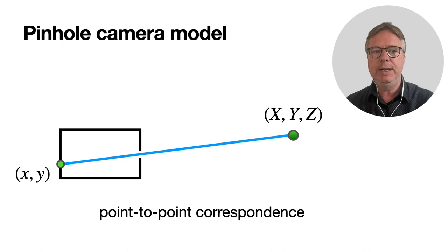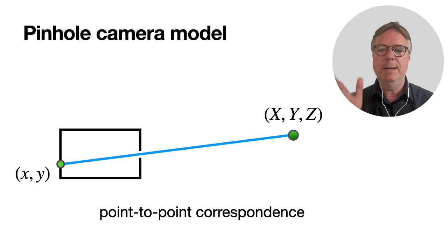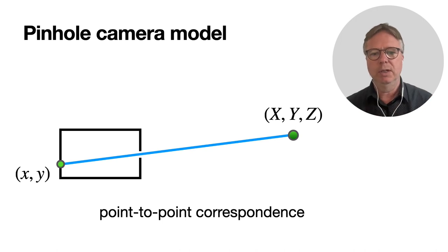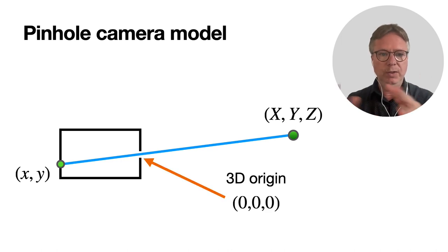If we have a 3D point in the world denoted by XYZ capital letters, and then there is a light ray that bounces or projects onto the back of the camera, the pinhole camera, then that point on the image is denoted by small x, small y. So from a 3D point to a 2D point, and that's what is referred to as a point-to-point correspondence, and that's a very important concept in vision science in general. Now we're going to fill in this picture.